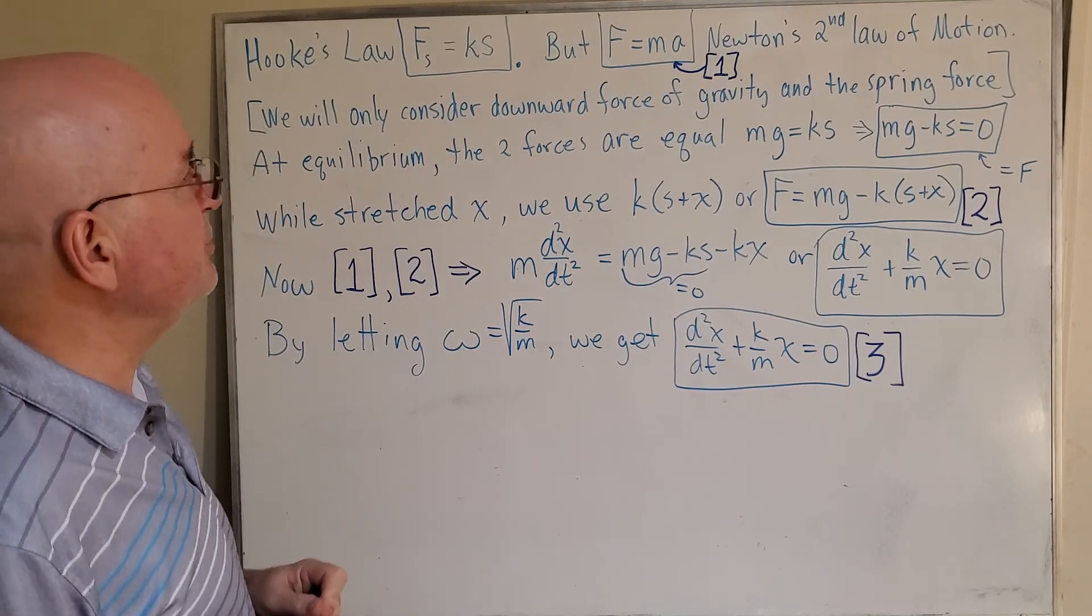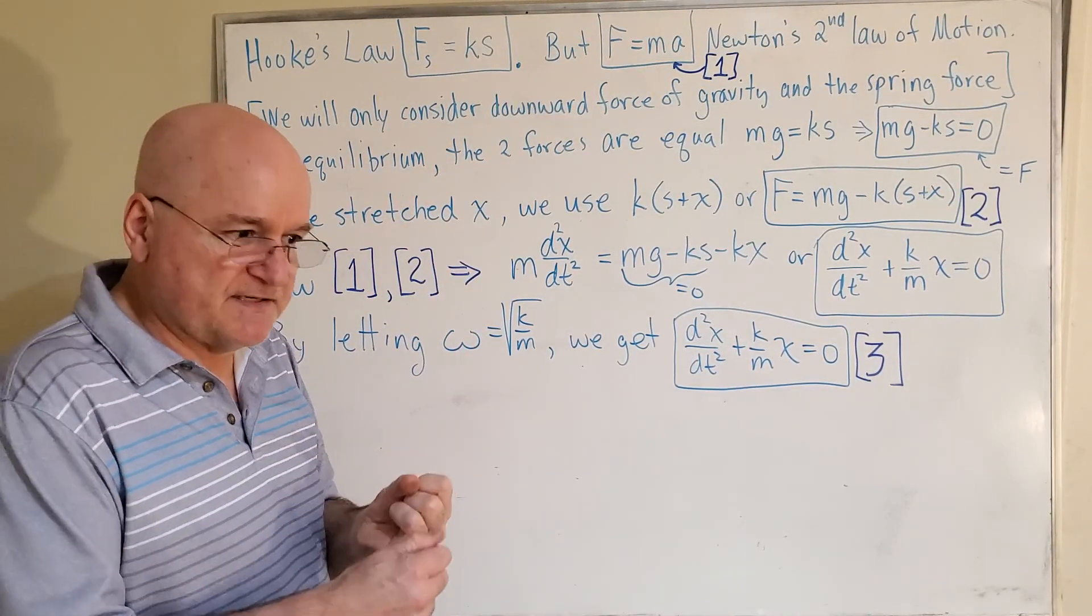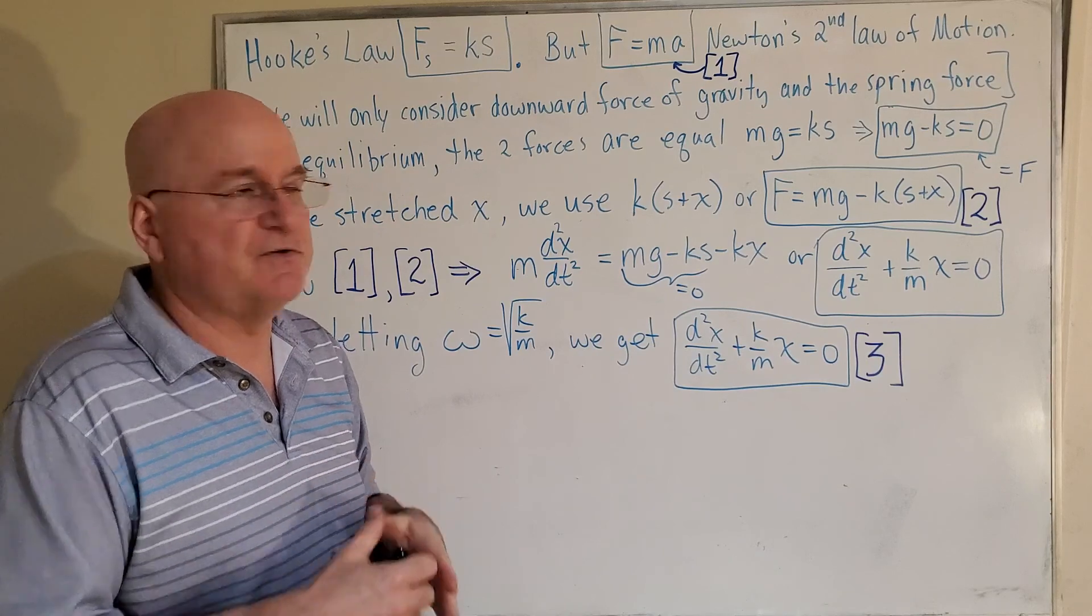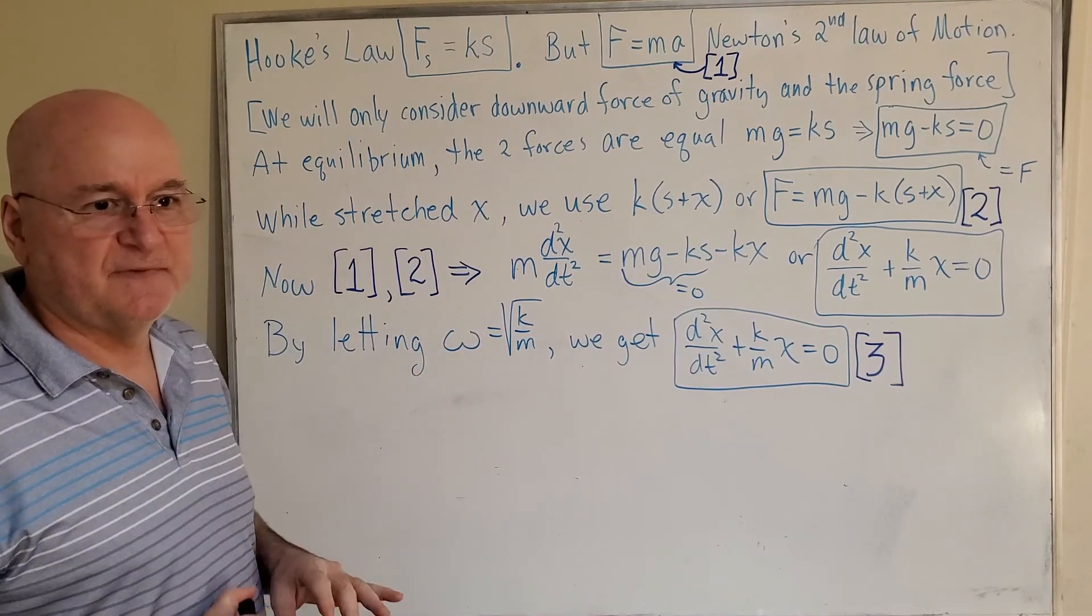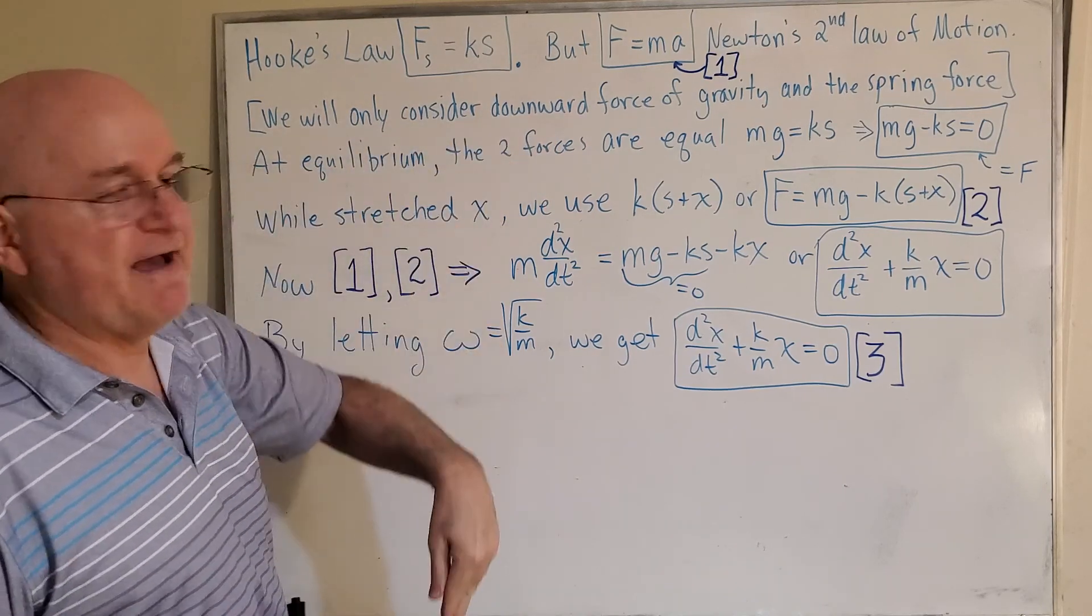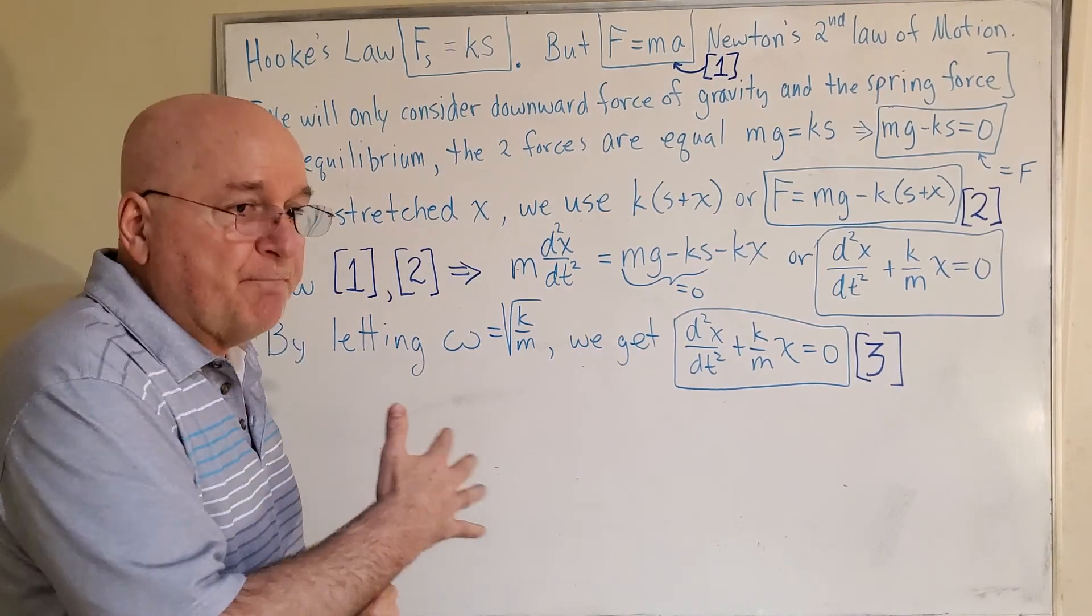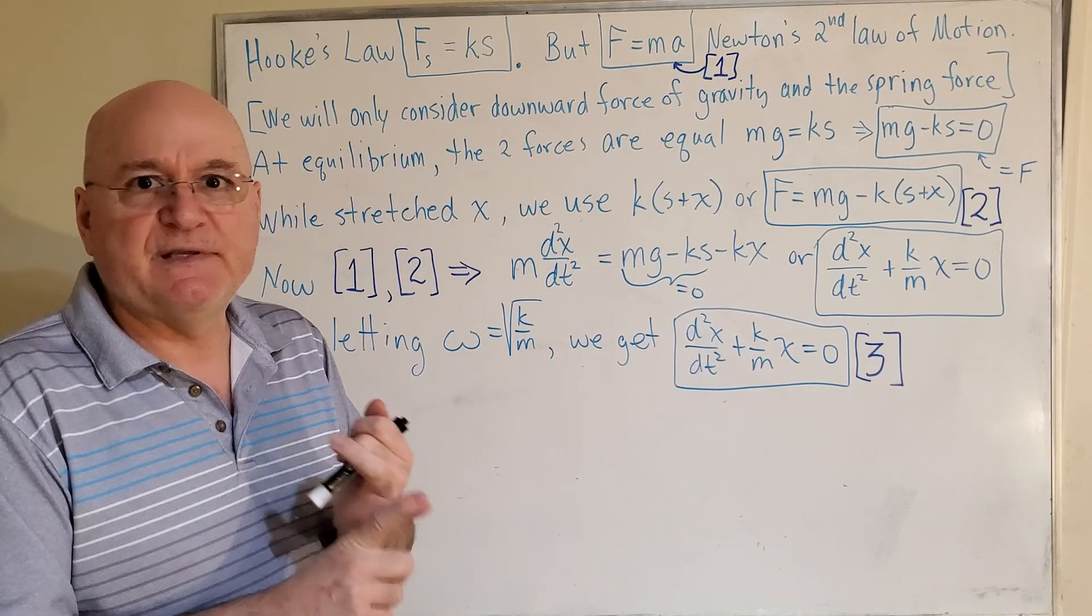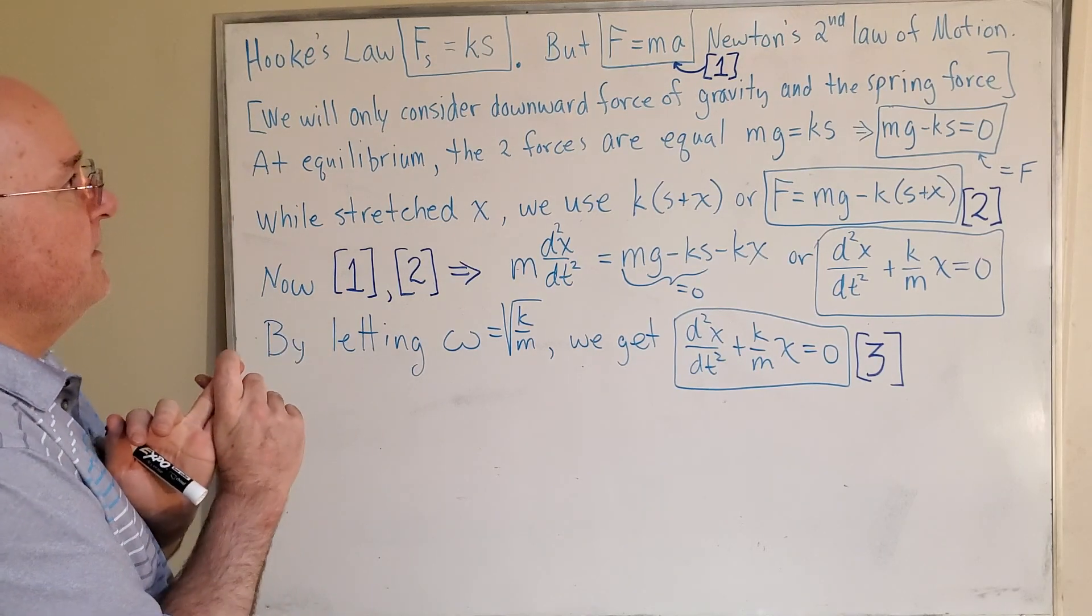And later when I write this, this acceleration is going to be the second derivative of the position. Velocity would be the first derivative of position, and then acceleration is the second derivative of position. Now, at least for the first half of this section we're in, we're only going to consider the downward force of gravity and the spring force. So that means the damping forces, if you put the whole system into water, we're not going to have that. We're going to assume absolutely no forces of friction, wind, anything like that.